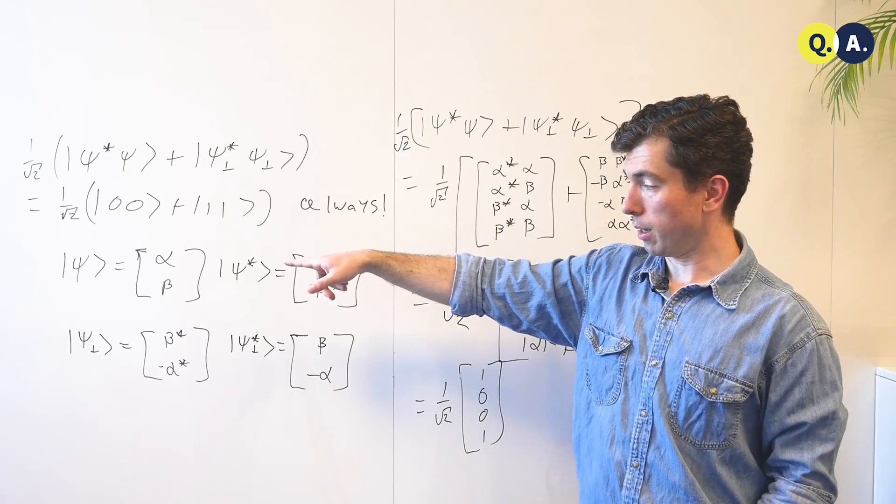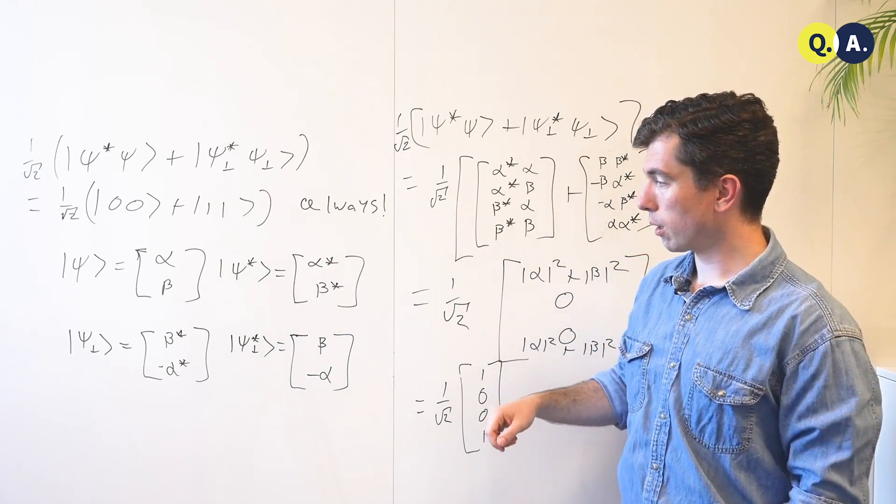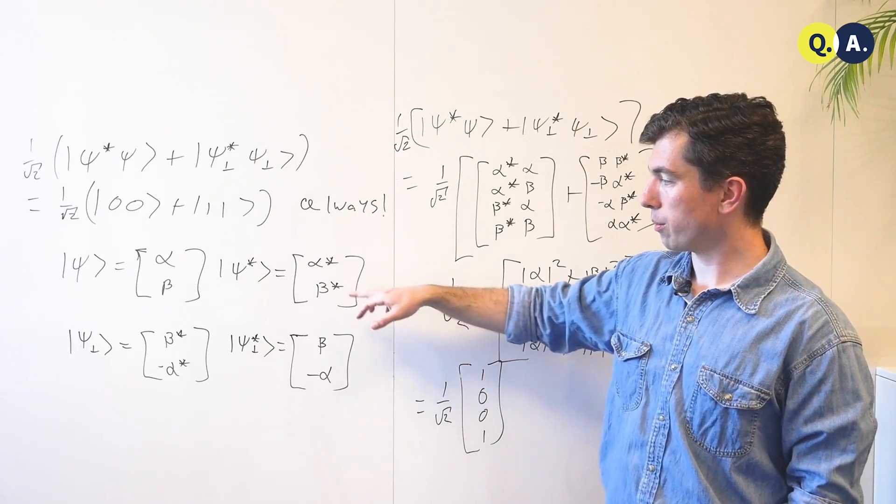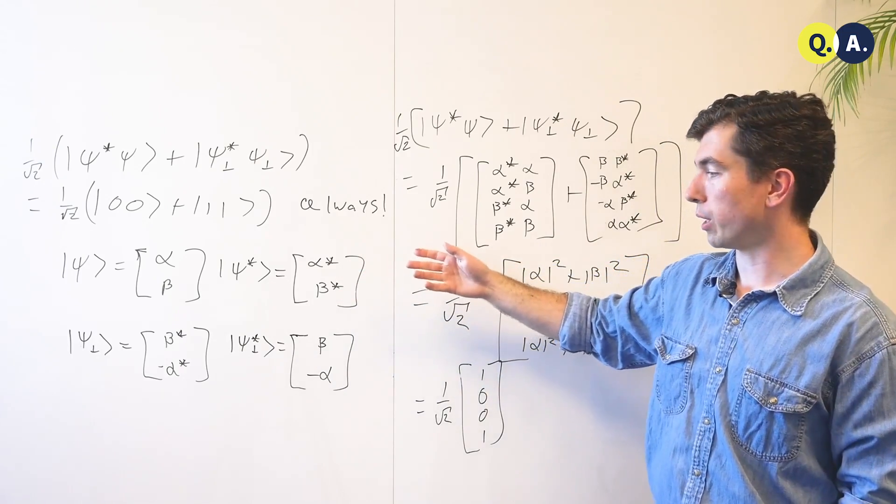So if we take an arbitrary wave vector psi, which is two complex coefficients alpha and beta, we can define psi star, which is just the complex conjugate of that state, which is also a valid state.